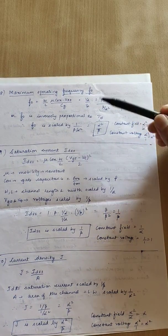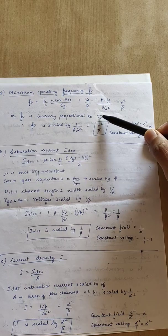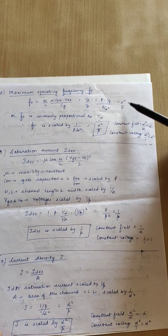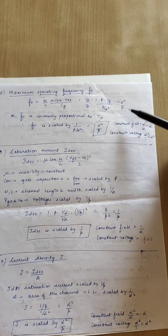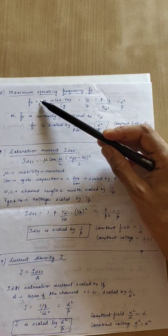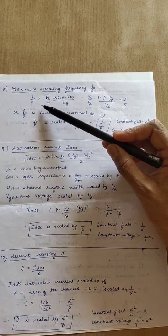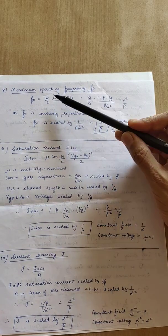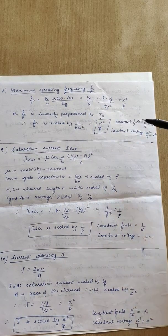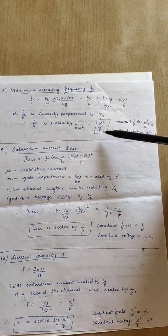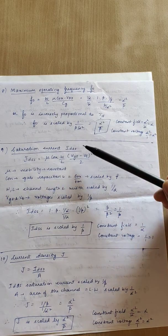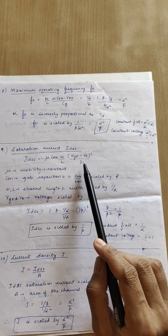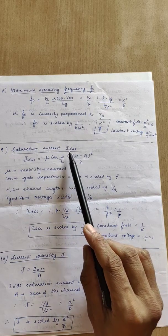Next: maximum operating frequency f₀. Frequency is the inverse of time delay. Since t_d scales as β/α², f₀ scales as α²/β. Alternatively, use the equation f₀ = (W/L) × μ × C_ox × V_DD / C_g. Identify all parameters, make suitable substitutions, and obtain the scaling factor consistent with the inverse of t_d.